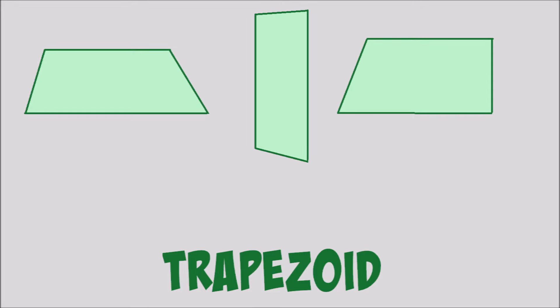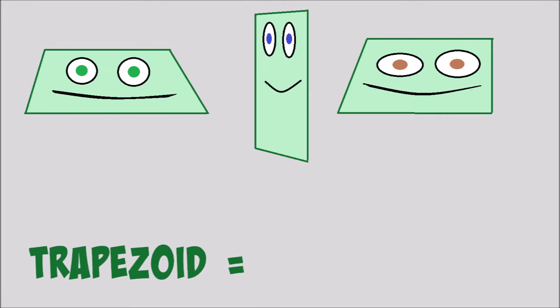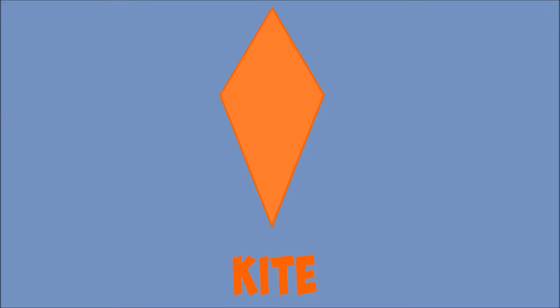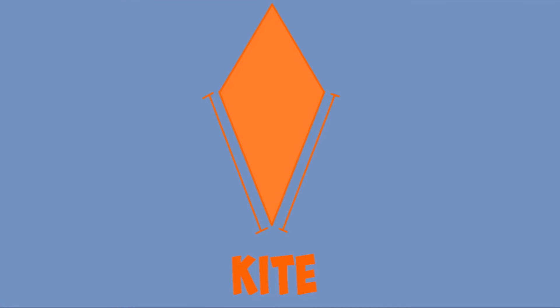A trapezoid has two sides that are parallel to each other, and the other sides do whatever they want. A trapezoid is a quadrilateral.